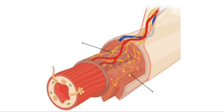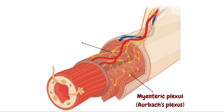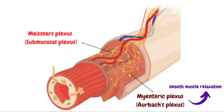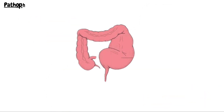When we look closer at the intestinal smooth muscle layer, it is composed of circular and longitudinal muscle layers. Within these layers are two plexuses or networks of nerves made up of ganglia, which are clusters of independent parasympathetic ganglionic cells. First, there is the myenteric plexus or Auerbach's plexus, which causes smooth muscle relaxation. The myenteric plexus is connected to the submucosal plexus, also known as Meissner's plexus, which helps in controlling blood flow.